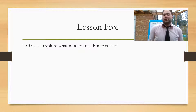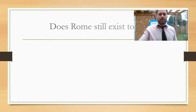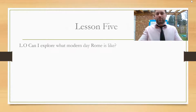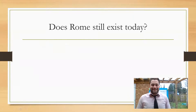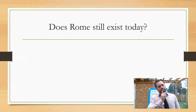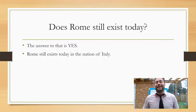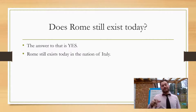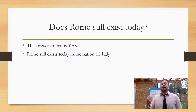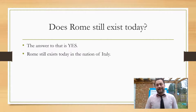Because you're going to be exploring what modern-day Rome is like. Does Rome still exist today? What do you think? Of course, the answer is yes. Rome still exists today in the nation of Italy, and Rome is actually the capital city of Italy. A capital city is where the parliament or the government meet. So Rome is the capital city of Italy.